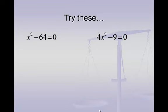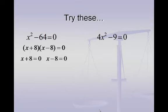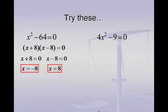For the first problem, we're going to factor these perfect squares into x plus 8 and x minus 8, both set equal to zero. On the first factor, I would subtract 8 in order to solve for x, giving me x equals negative 8. On the second factor, I would add 8, giving me x equals 8. So the two answers to this problem are x equals negative 8 and x equals 8.